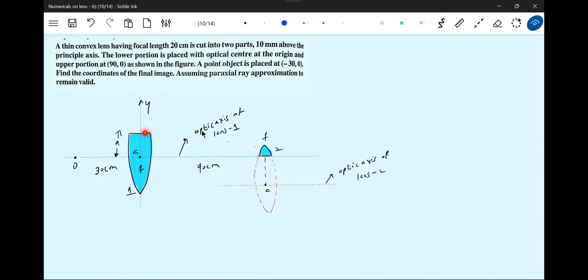The axis will shift how much? By a. This is cut and it is smooth here, so definitely the optic axis will shift how much? By a. This is the trick of the problem, nothing is there. What is a? a is what, 10 millimeters.